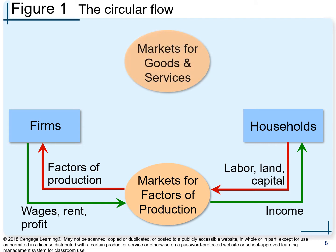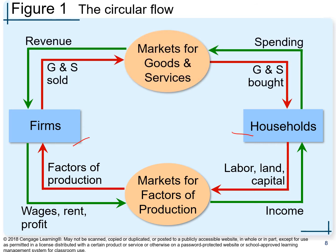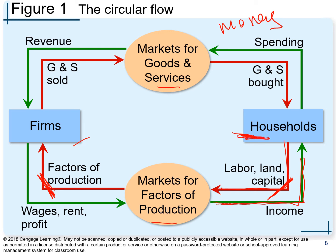In the circular flow diagram we have firms, households, two markets - the market for goods and services and the market for factors of production - and two lines: a red line and a green line. The red line represents the flow of factors of production in the economy. Starting from households: they own labor, land, and capital, and on the market for factors of production they sell it to firms.